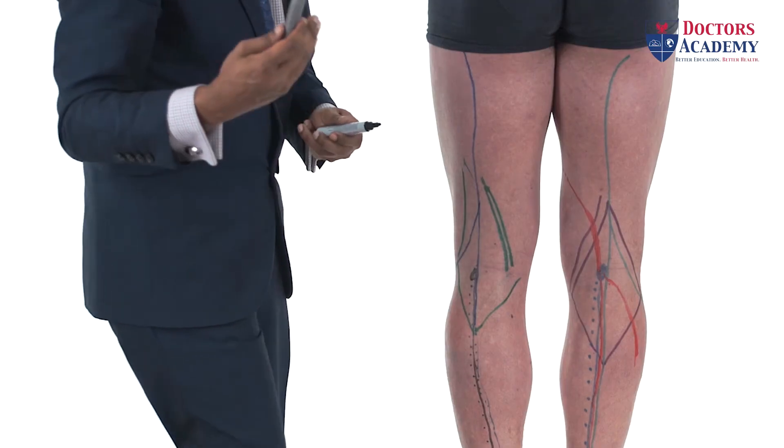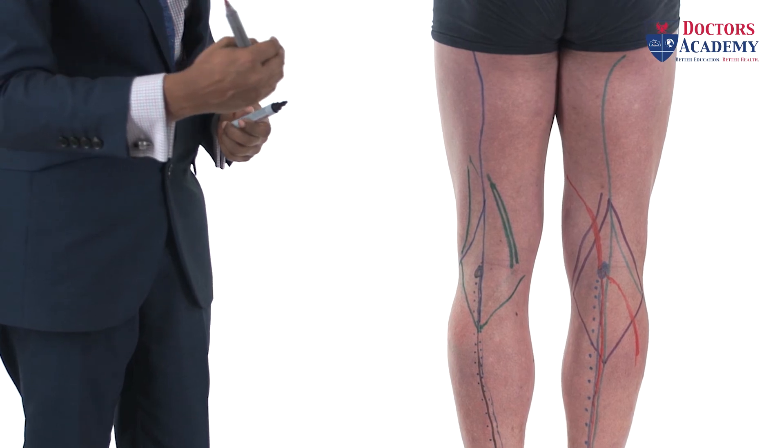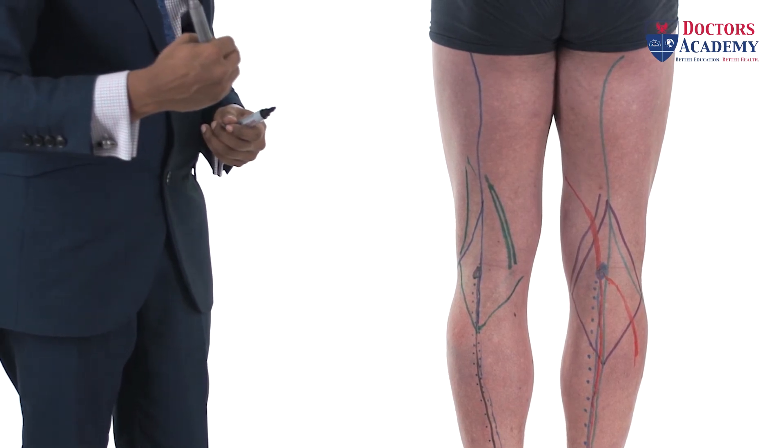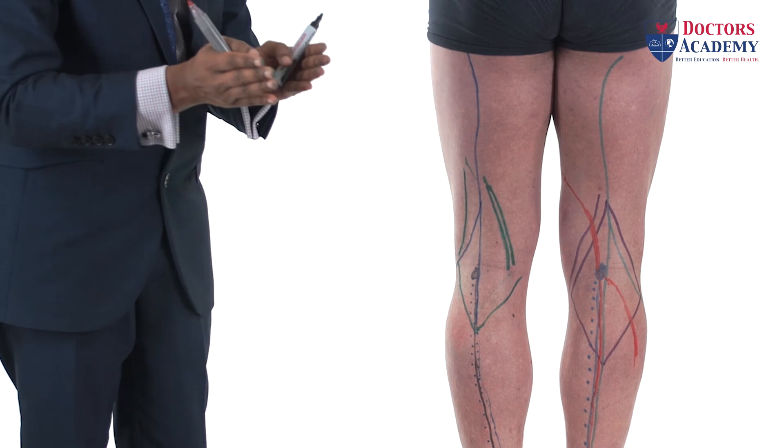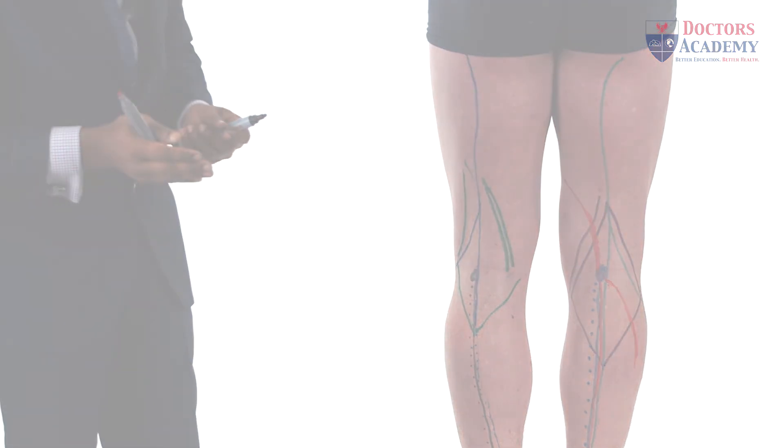As it comes up, the tibial nerve and the posterior tibial artery are structures behind the medial malleolus, and they enter the sole of the foot as the medial and lateral plantar arteries and the medial and lateral plantar nerves.